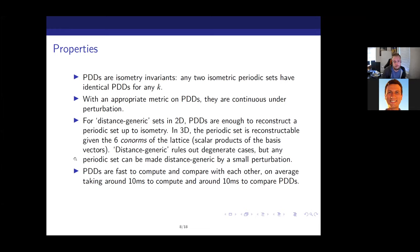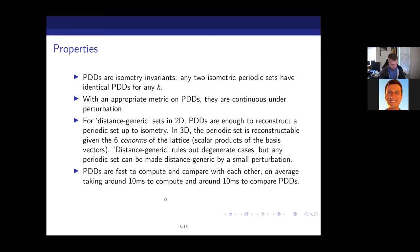PDDs are also very fast for computation and comparison, which is quite nice. Once you compute a PDD you can store it; you have an arbitrary choice of k, but nicely you can increase k without changing previous values. You compute a PDD and store it, never needing to compute it again. Compared to RMSD, we have a significant advantage in speed.